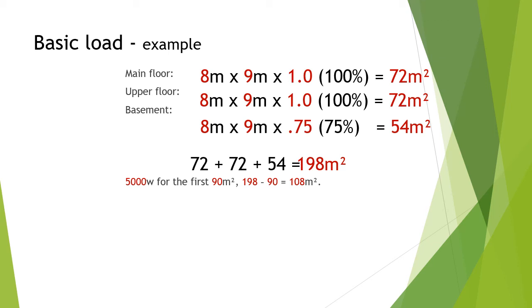Then we go to 8-200 AI, and we see that for the first 90 meters squared, we're going to have 5,000 watts. So we take 198, subtract 90. That's 5,000. We're going to add another 1,000 watts for the next 90 meters squared portion. So we take 108, minus 90.